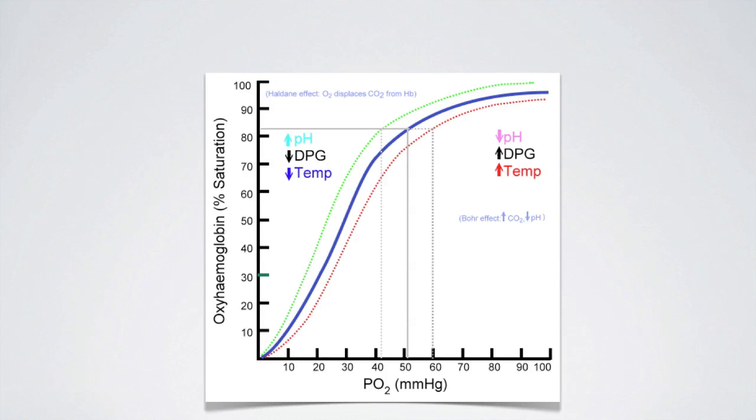We've looked at this oxygen dissociation curve of hemoglobin in episode 60 and we showed how as oxygen is taken up by hemoglobin that increases the affinity and makes it easier for more oxygen to bind, and as oxygen is released it makes it easier for more oxygen to be released. Oxygen leaves the hemoglobin and goes into the tissues so it can be used by the muscles and so on.